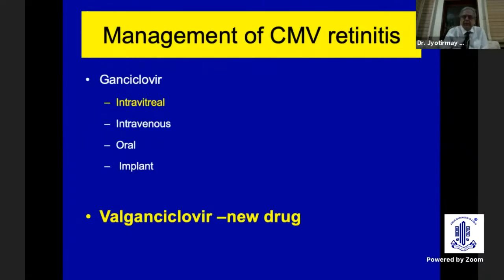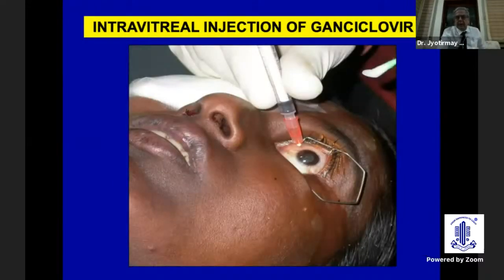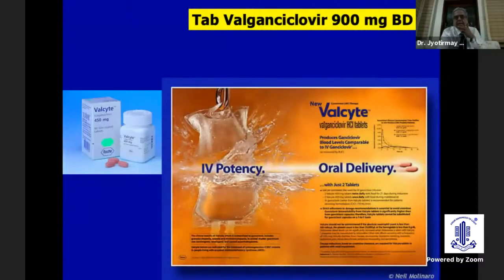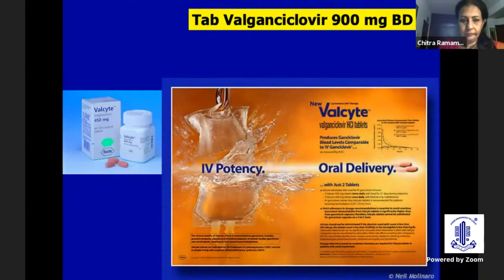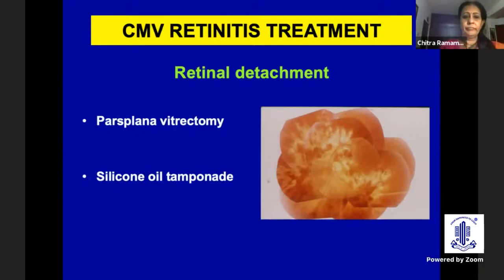How do you manage CMV retinitis? Earlier we used intravenous ganciclovir therapy, but now it has been replaced by oral valganciclovir or intravitreal ganciclovir. The intravitreal dose is 2,000 micrograms twice weekly as induction and 2,000 micrograms once weekly as maintenance. Valganciclovir is 450 mg, two tablets twice daily for CMV retinitis — it works very well and avoids injection-related complications. About 30% of cases can develop retinal detachment, requiring pars plana vitrectomy and silicone oil tamponade; the silicone oil is kept in for longer than usual.